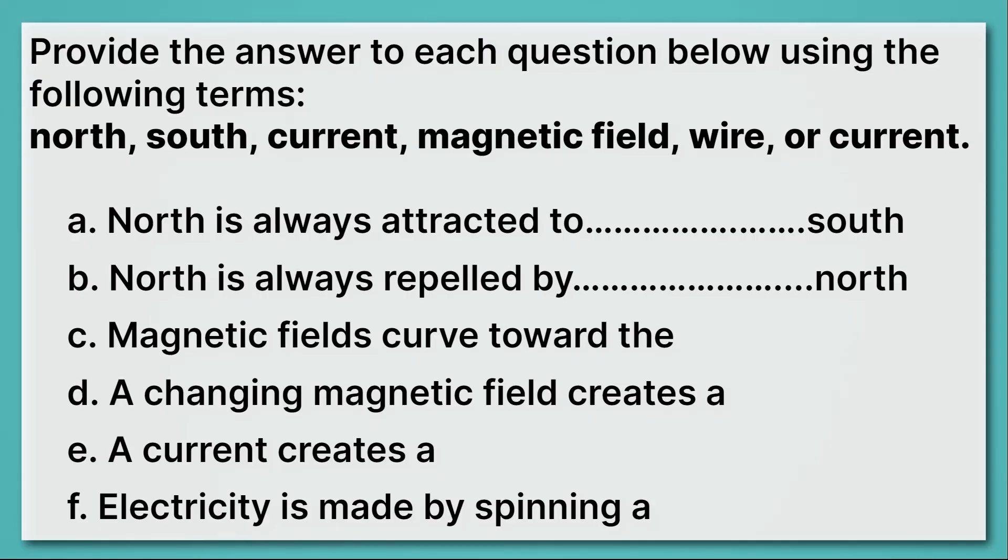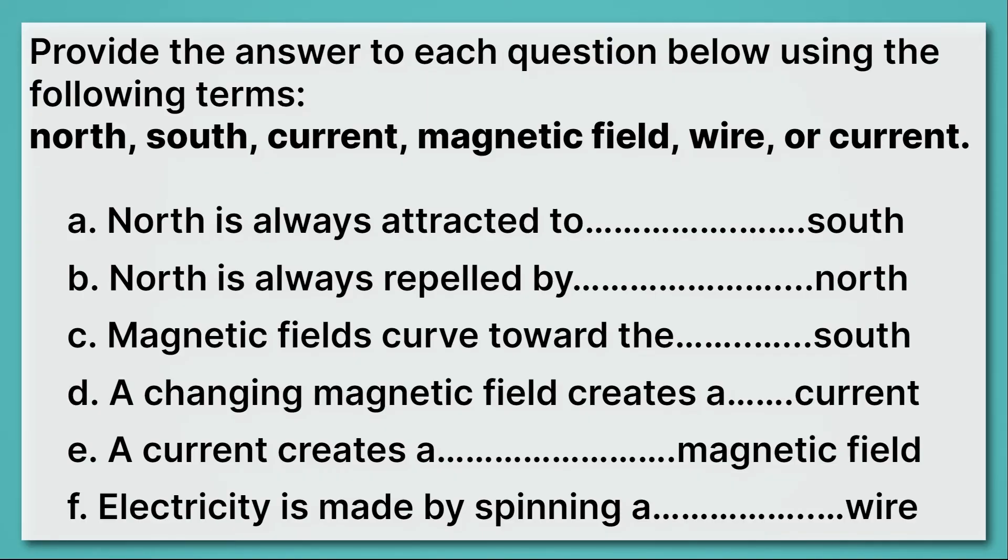C, magnetic fields curve towards the south. So our magnetic fields always curve from north to south. A changing magnetic field creates a current. That's what goes on in a generator. And a current creates a magnetic field. Lastly, electricity is made by spinning a wire. If we spin a wire in a magnetic field, we have what's called a generator, and it makes a current.